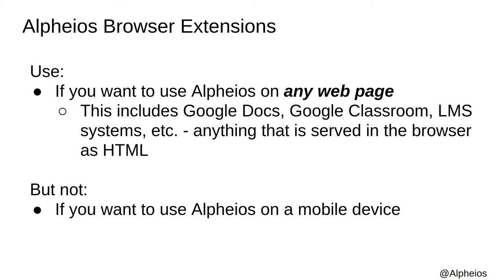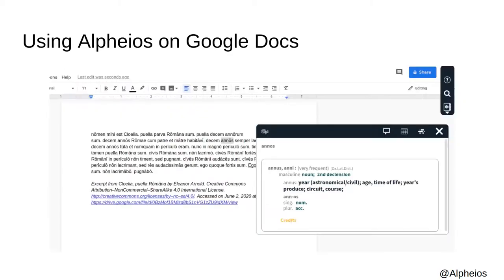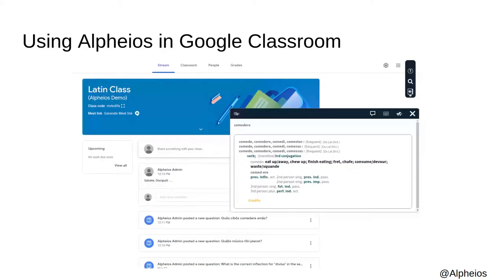So don't worry, if you want to use Alpheus on an iPhone, tablet, or Android device, you definitely can, just not the browser extensions. The ability to use Alpheus on Google Docs means that you can use it on pretty much any text you can put in a Google document. I have here an excerpt from an open access novella in Latin published by Eleanor Arnold. You can even use it on Google Classroom streams, activities, forms, and quizzes.